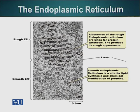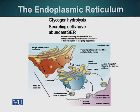Smooth endoplasmic reticulum also performs some chemistry and protein modifications. For example, the disulfide bridge bonds that we saw in our proteins are also formed in the endoplasmic reticulum. The smooth endoplasmic reticulum is also a site of glycogen hydrolysis and is also the site where lipid synthesis takes place.